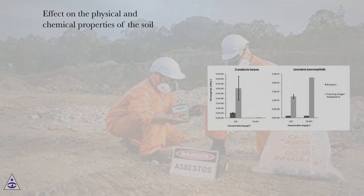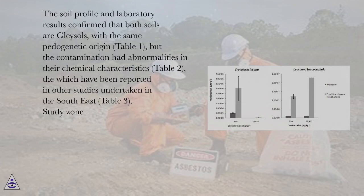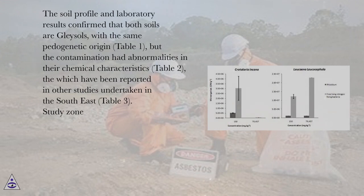Effect on the Physical and Chemical Properties of the Soil. The soil profile and laboratory results confirmed that both soils are Gleisols with the same pedogenetic origin (Table 1), but the contamination had abnormalities in their chemical characteristics (Table 2), which have been reported in other studies undertaken in the southeast (Table 3).